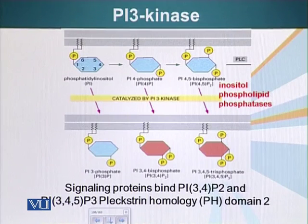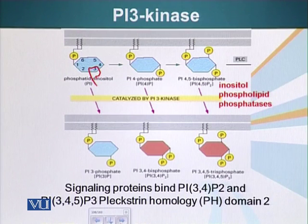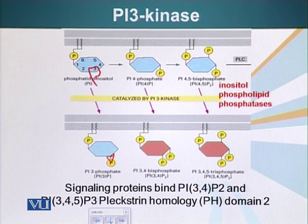The number 3 is there because it attaches a phosphate group at carbon number 3 on phosphatidylinositol. This is a reaction catalyzed by PI3 kinase and it results in addition of a phosphate group at carbon atom number 3, as you can see on the screen.